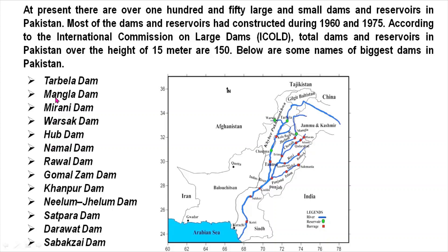The major dams of Pakistan include Tarbela Dam, Mangla Dam, Mirani Dam, Warsak Dam, Hub Dam, Namal Dam, Rawal Dam, Gomal Zam Dam, Khanpur Dam, Satpura Dam, and Sabzai Dam. You can see the structure of these different water reserves on the map, showing Pakistan's irrigation system with different rivers, tributaries, barrages, and dams including Mangla, Tarbela, Warsak, and Jeshma.